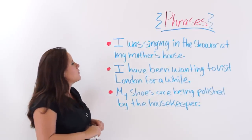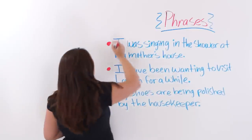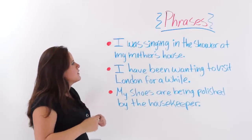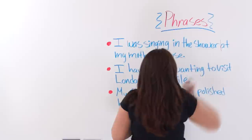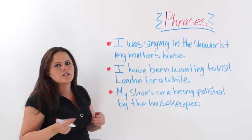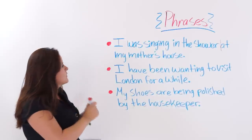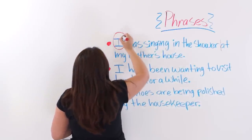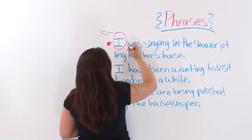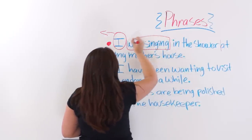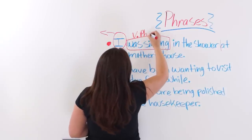The first one says: I was singing in the shower at my mother's house. This is a very complete thought, so if we leave it like this, it would be an independent clause. If you break it up at 'at my mother's house', that would be a dependent clause because it depends on the first part to make sense. It must have a subject and a predicate. 'Was singing' — that would be the verb phrase.